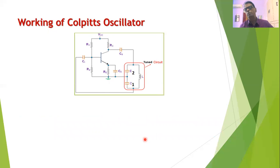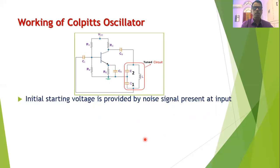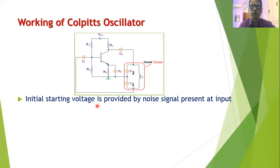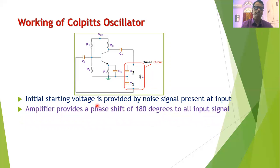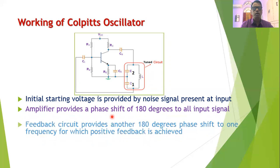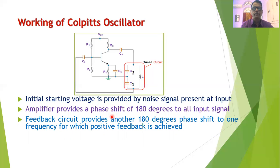The Colpitts oscillator starts oscillating using a noise signal present at the input as the starting voltage, since no actual input is connected. The amplifier amplifies this noise signal and provides a phase shift of 180 degrees to all frequencies at the input. The output of the amplifier is connected to the feedback circuit, which provides an additional phase shift of 180 degrees — but only for one particular frequency: the resonant frequency of the tuned circuit.